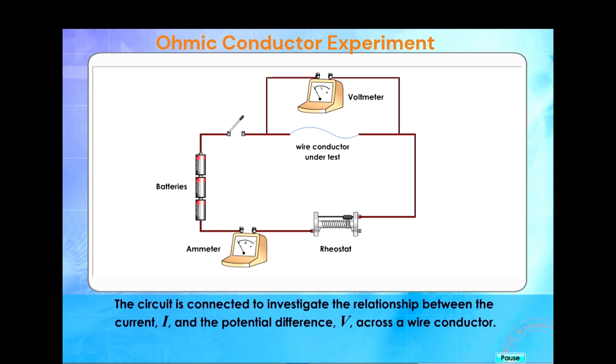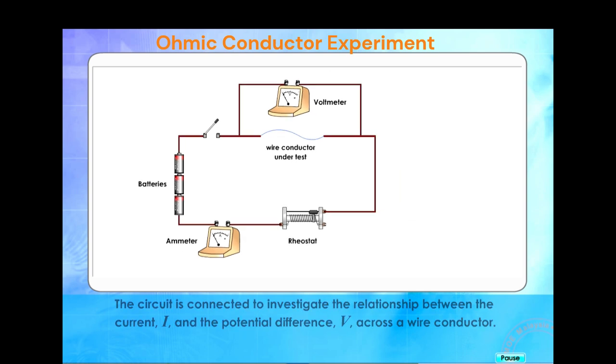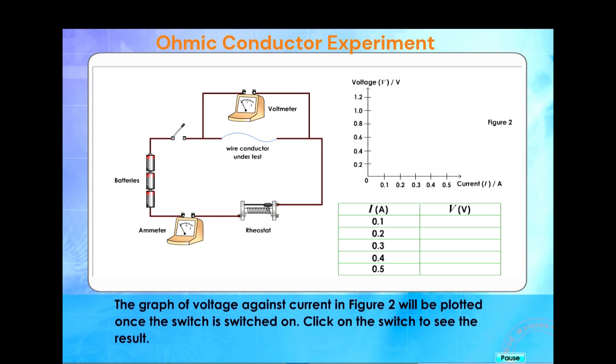The circuit is connected to investigate the relationship between the current I and the potential difference V across a wire conductor. The graph of voltage against current in Figure 2 will be plotted once the switch is switched on. Click on the switch to see the result.